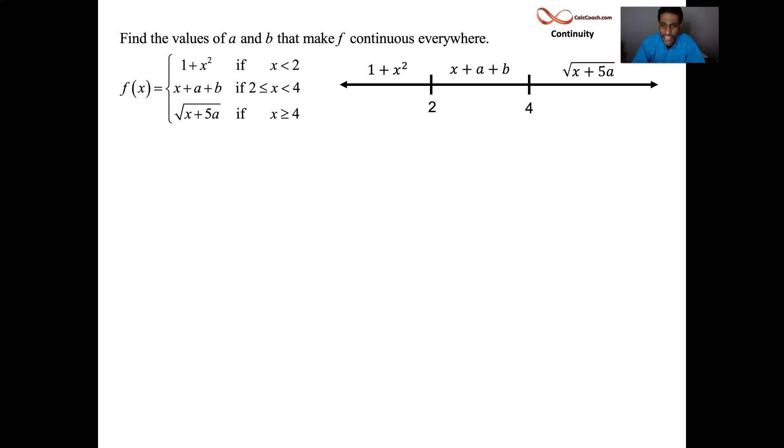And so this question is asking, what would a and b need to be in order for this to be a function that's continuous everywhere? Each individual piece is continuous where it's defined at. The polynomial piece is continuous everywhere. The root will be continuous as long as it's defined. So what really matters is the breakpoints. And so how could we have the parabola meet up to the line and then meet up to the root? What a and b make that happen? That's the question. So I find the number line is helpful.